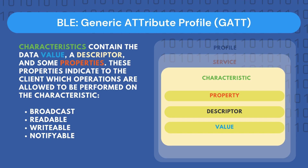Characteristics, which are essentially attributes, contain the data value, the descriptor, and some properties. These properties indicate to the client the set of operations allowed on this characteristic. They can either be: broadcast, which allows sending data to BLE devices using advertising packets; readable, meaning the client can read the characteristic's value; writeable, meaning the client can write a new value onto this characteristic; or notifiable, which means when a connection is established the client receives a notification if the server updates this characteristic.